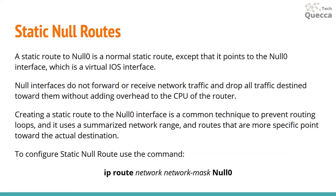A static route to null zero is a normal static route except that it points to the null zero interface, which is a virtual EOS interface. Null interfaces do not forward or receive network traffic and drop all traffic destined toward them without adding overhead to the CPU of the router. Creating a static route to the null interface is a common technique to prevent routing loops — it uses a summarized network range and routes that are more specific point toward the actual destination.